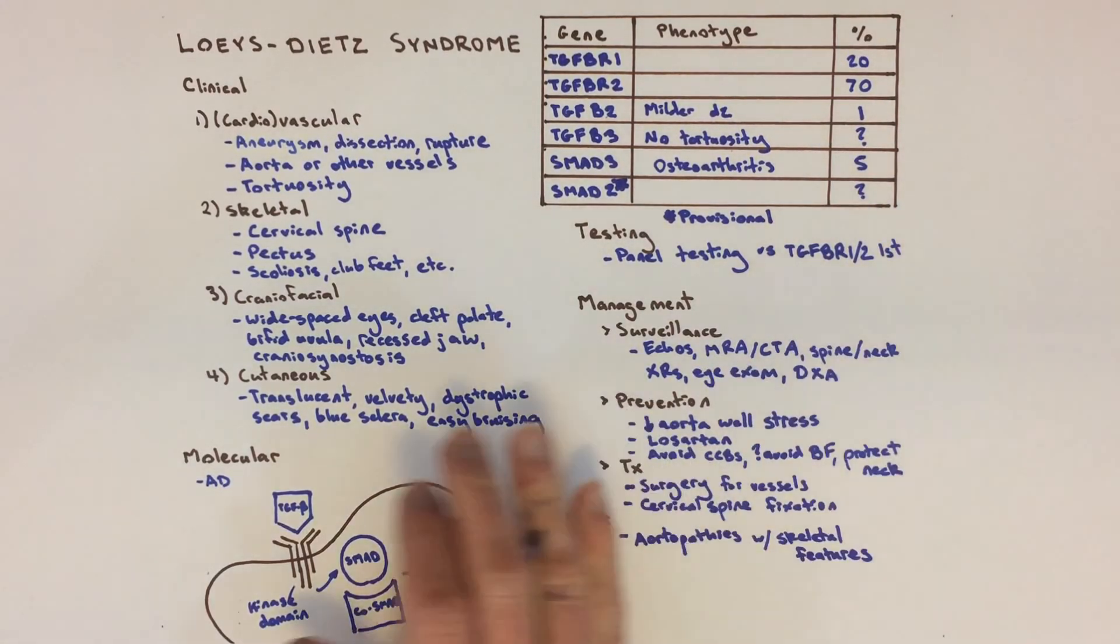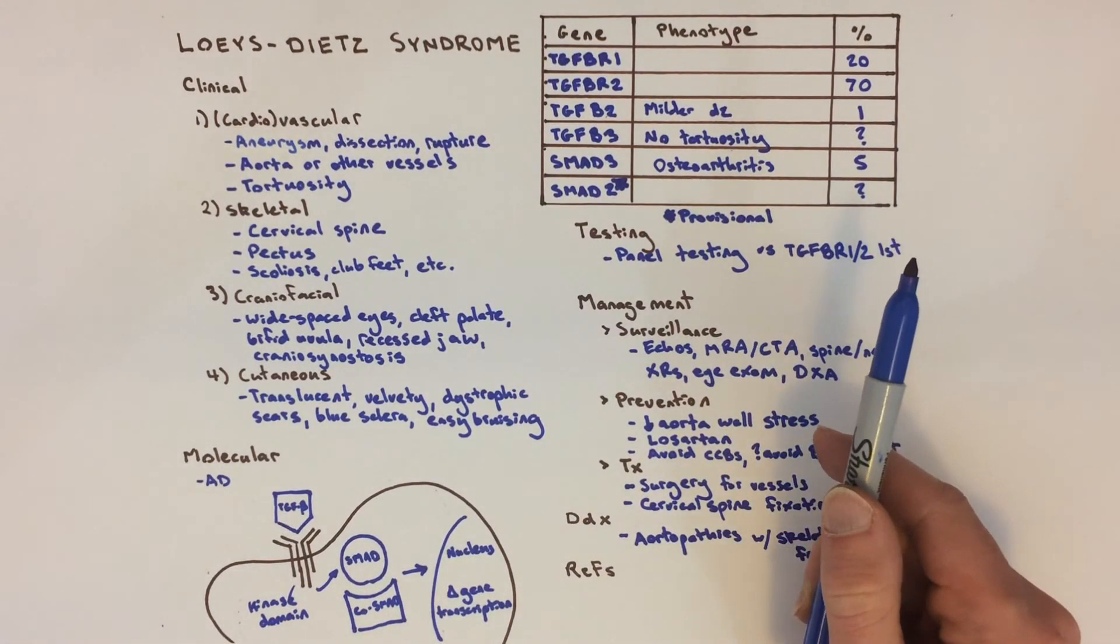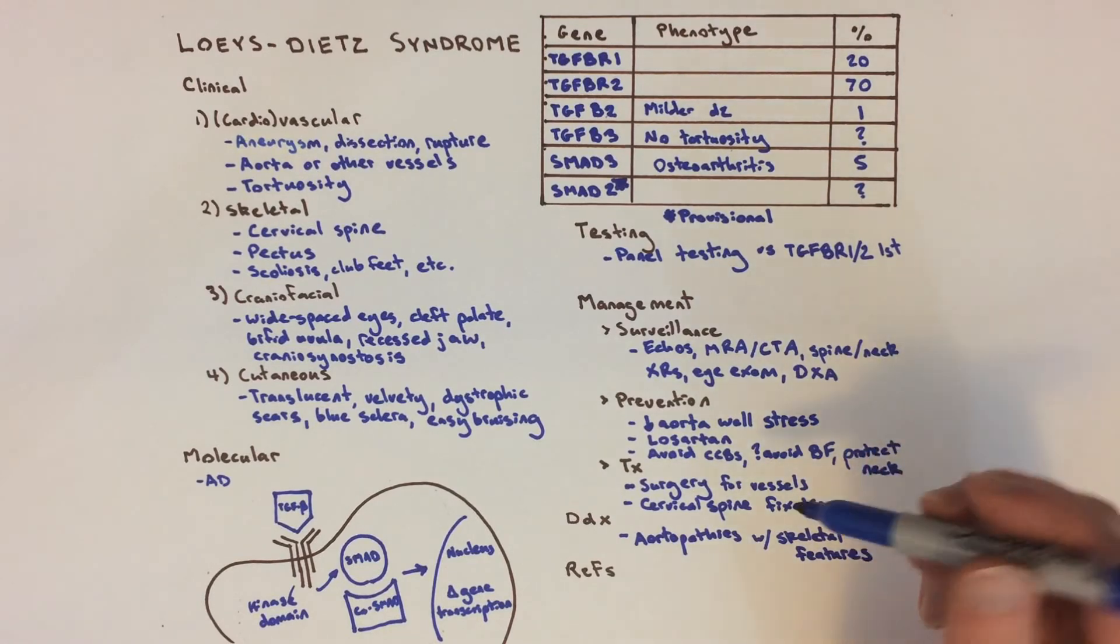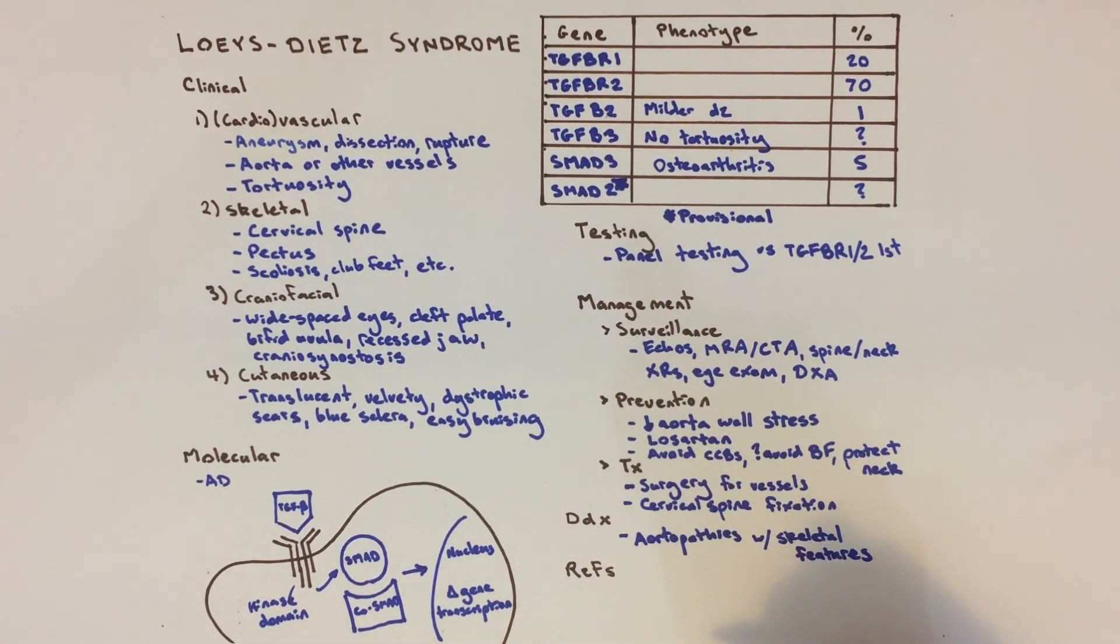There are some differences between these syndromes and Loeys-Dietz, for example lens dislocation in Marfan syndrome or developmental delay in Shprintzen-Goldberg syndrome, but it may be unclear which one your patient has. Fortunately, there are gene panels that can test for a large number of connective tissue disorders or a large number of syndromes affecting the aorta, called aortopathies, all in the same test.